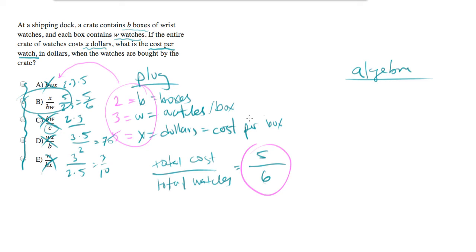Now, if while you were solving this, you figured out that the total cost was 5, which simply is X, and the denominator we did total watches, which ended up being 6 because it was the number of boxes times the number of watches per box, you could have bailed to algebra and gone straight for answer B.